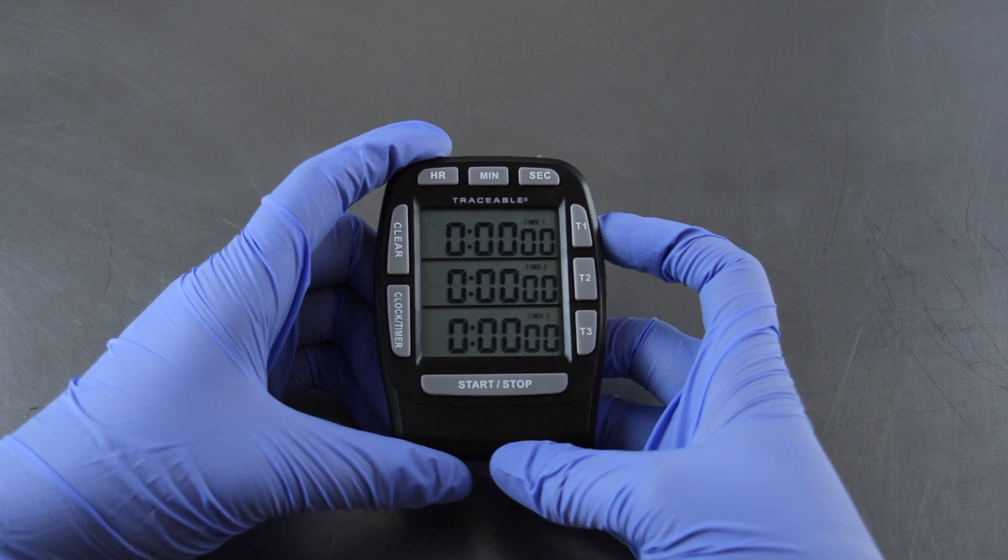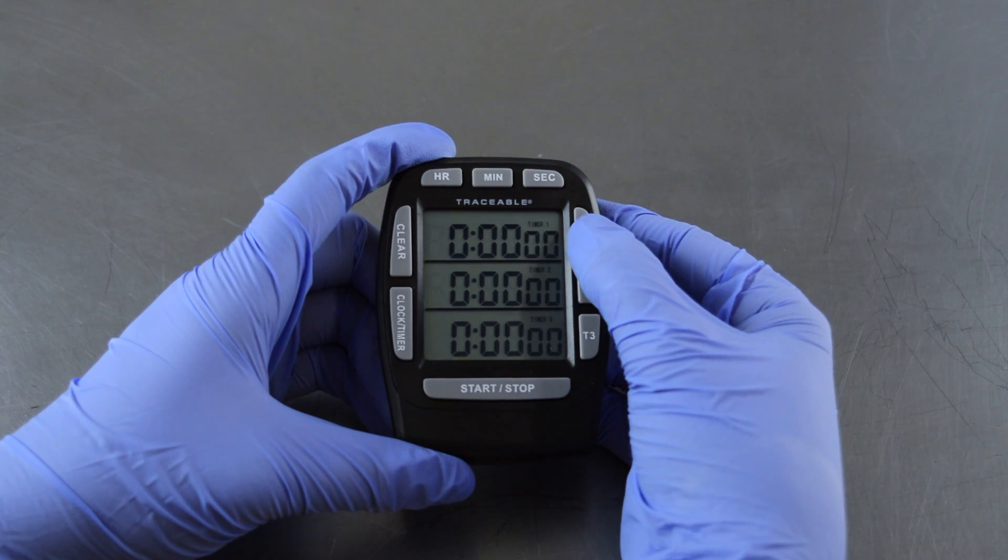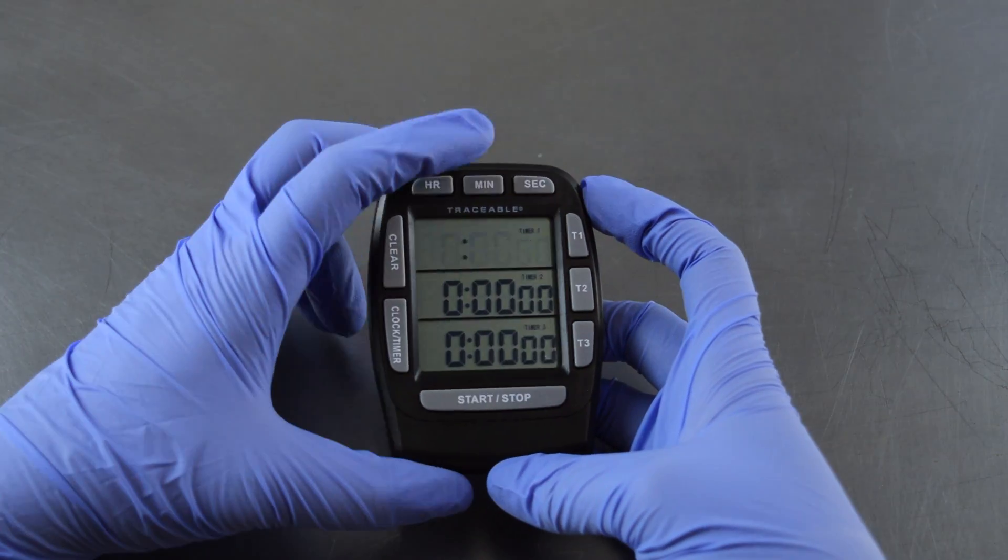To begin, press and hold T1 on the upper right-hand side of the timer. Once it begins flashing, you can set the desired time.